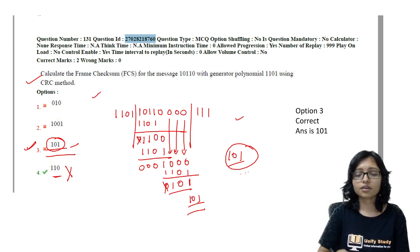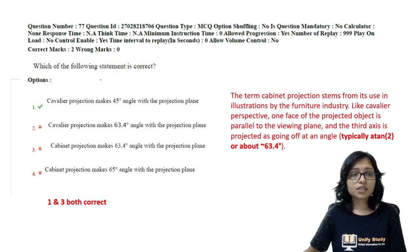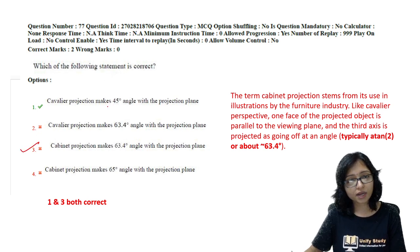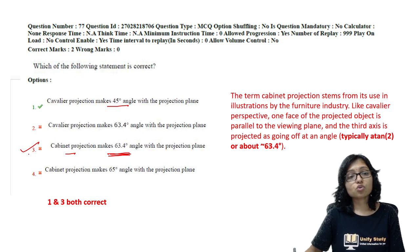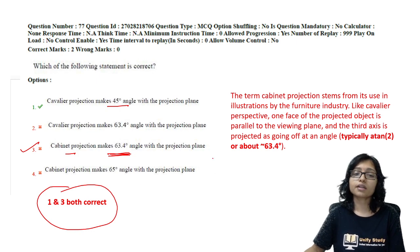This graphics question, option 3 will also be correct. Option 1 is correct and option 3 will also be correct because cabinet projection is also 63.4. That's why those who marked option 3, you can challenge because both option 1 and option 3 should be correct. Those who marked option 3 should also get the marks for this question.